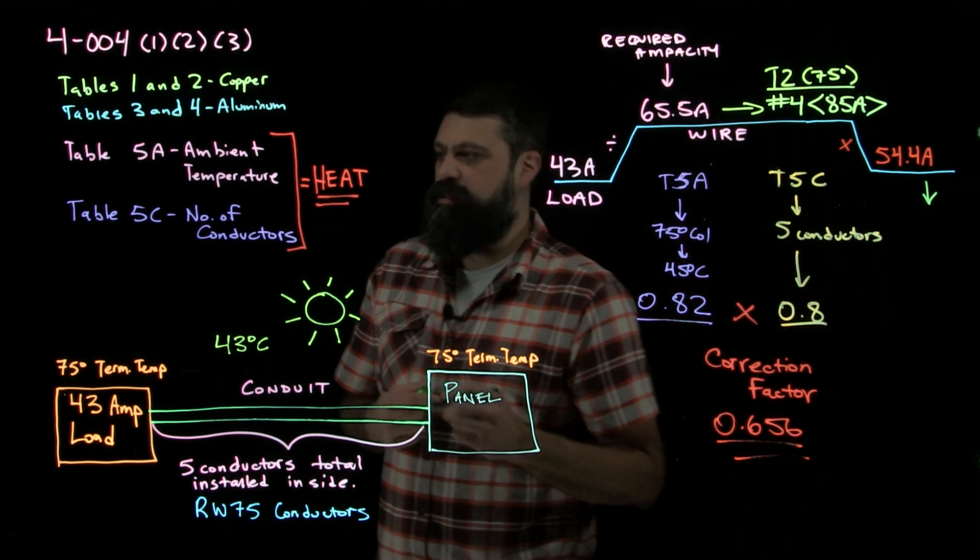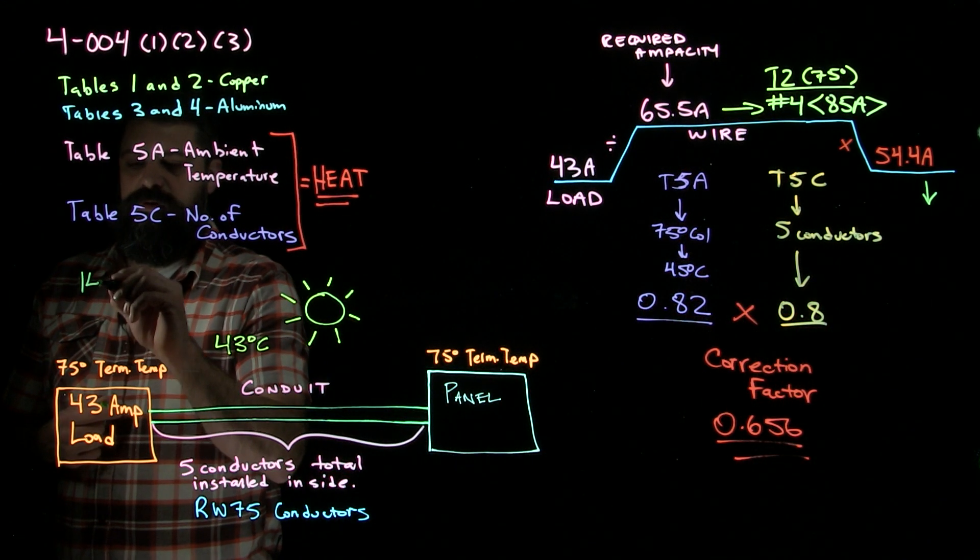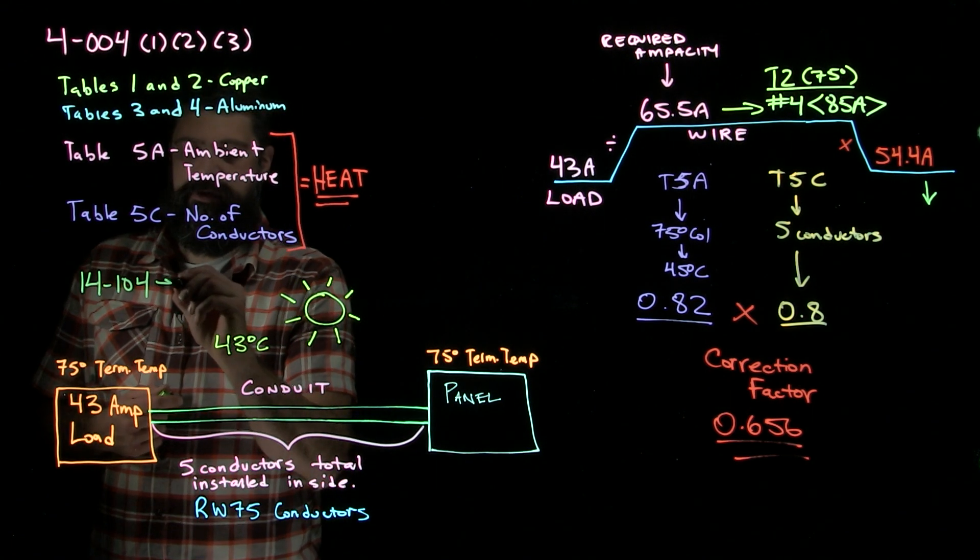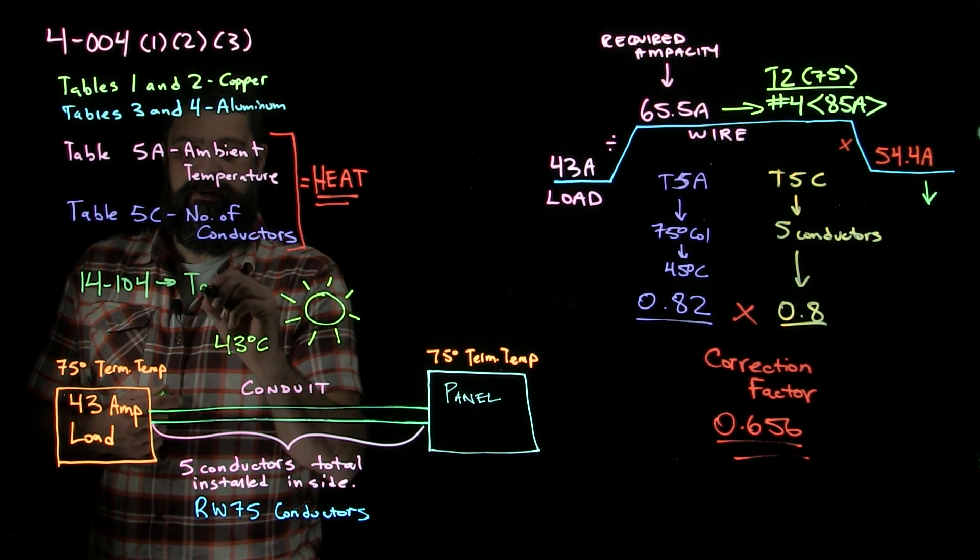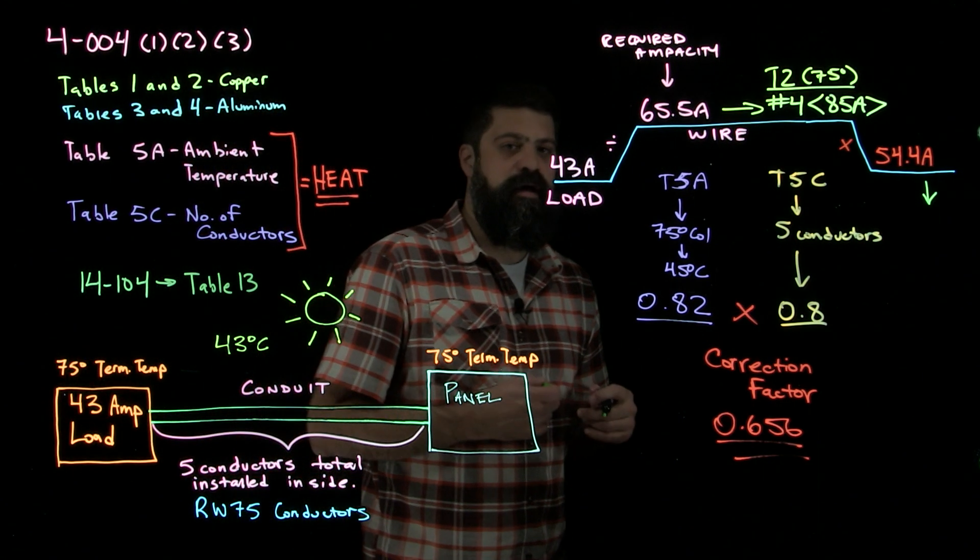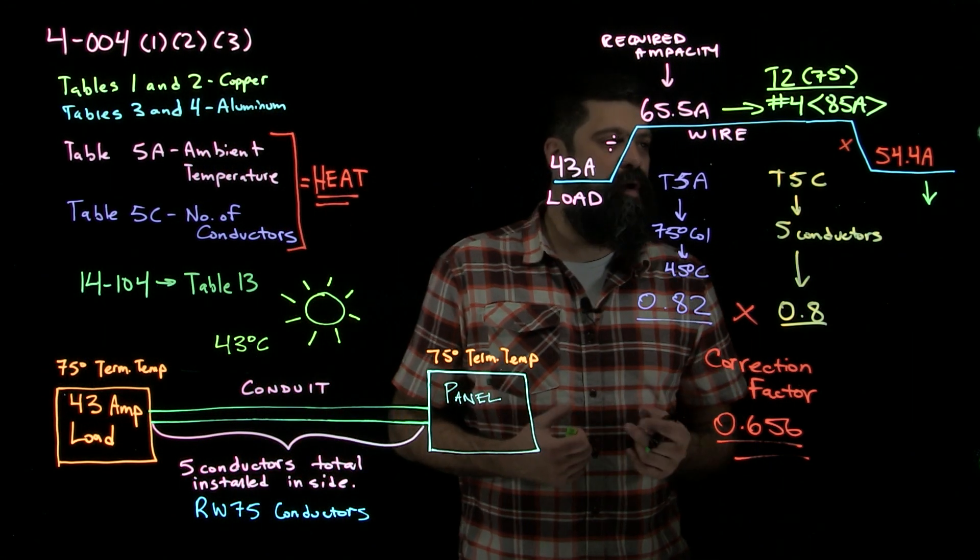What told me that that was the case? That comes from 14.104. That takes me to table 13 where I size my breakers. Gives me a range based on the different ampacities that these wires fall under.